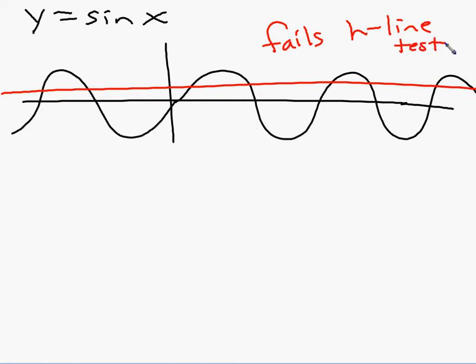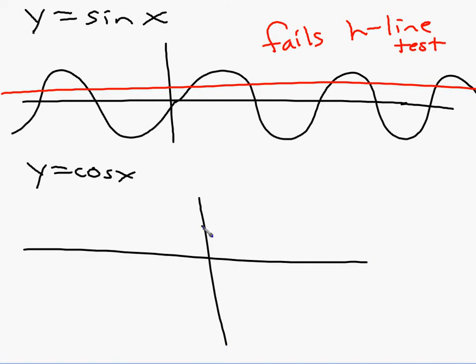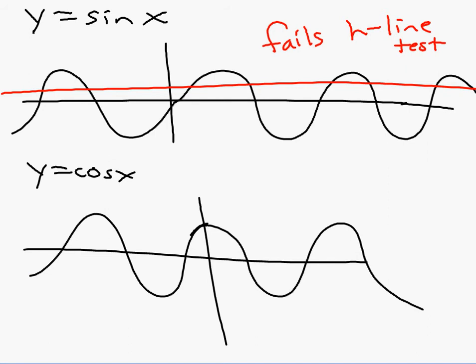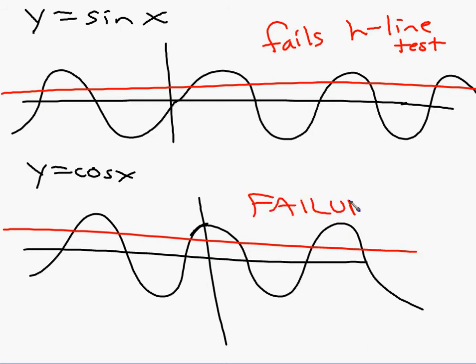The same is true for cosine — it fails the horizontal line test too. Draw a horizontal line through the cosine graph and it hits more than once. So as it is, neither sine nor cosine has an inverse. We need to change that.